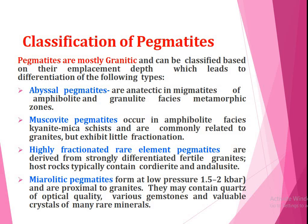Muscovite pegmatites occur in amphibolite facies, in kyanite-mica schists, and are commonly related to granite but exhibit little fractionation. Highly fractionated rare earth pegmatites are derived from strongly differentiated fertile granite.